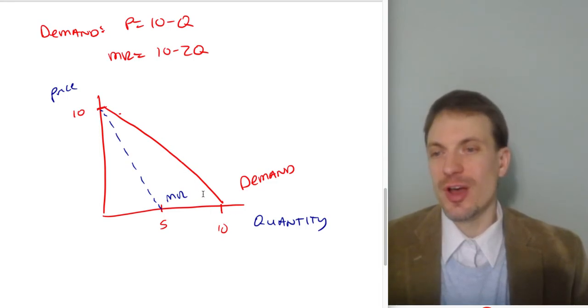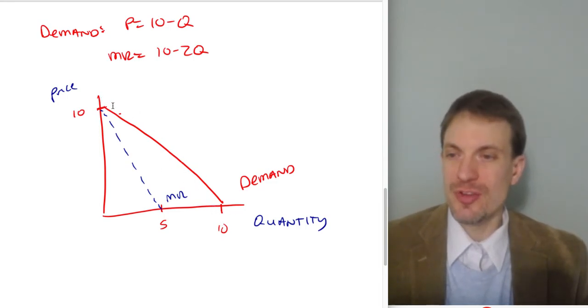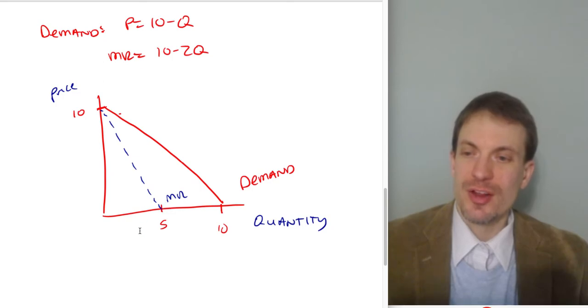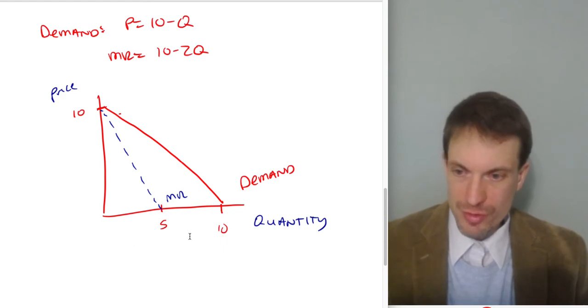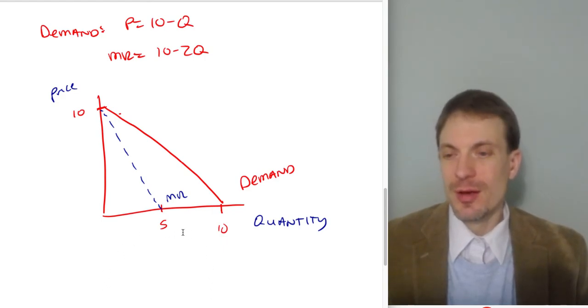I've got a video talking about first-degree price discrimination. I'll link that up. Another video I've got is the link between total revenue and elasticity. I'll link that up as well, where I show the total revenue curve you draw as a downward opening parabola on the same quantity axis down here.